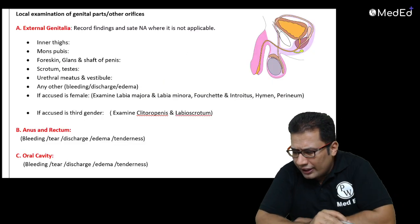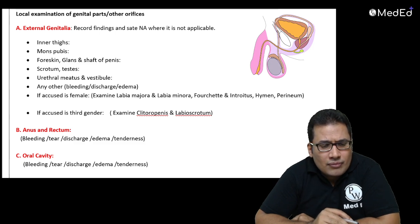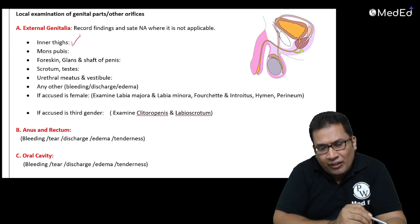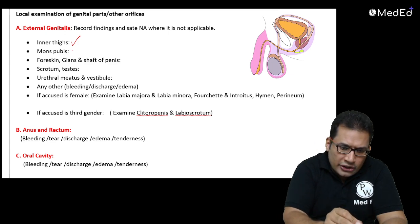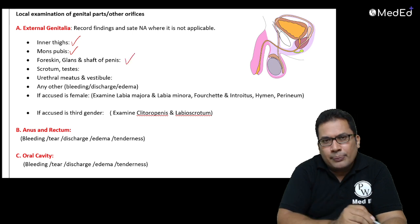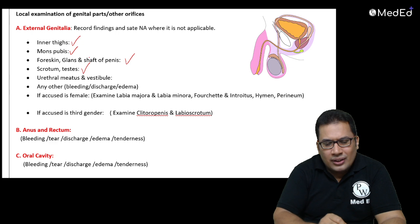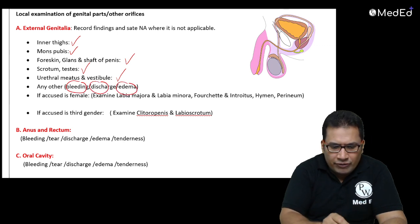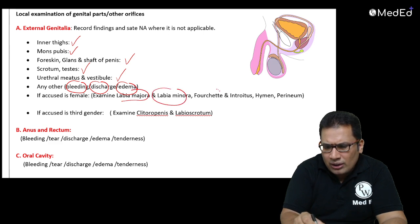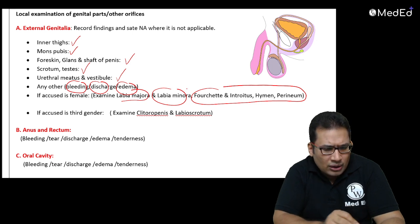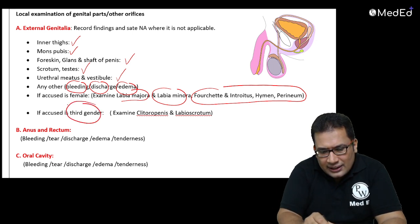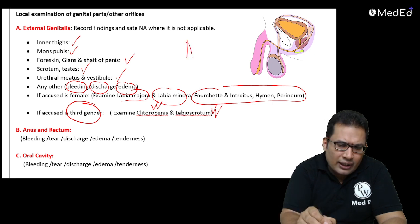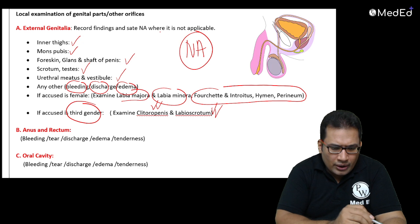Local examination is a very important component. Examine the external genitalia. For male: mons pubis, glans (top of penis), prepuce, testes, external urethral meatus, vestibule — note any bleeding, discharge, or edema. For female: labia majora, labia minora, fourchette, introitus, hymen, perineum. For third gender: clitoris/penis and labia/scrotum if present. Also examine the oral cavity for bleeding, tears, discharge, or edema.